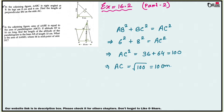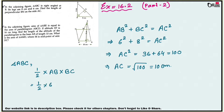In this diagram, BN is perpendicular on AC. To find the area of triangle ABC, we use the formula: half times height times base, which is half times AB times BC, equal to half times 6 times 8, giving us 24 centimeter square as the area of this triangle.